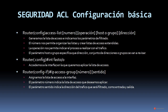Finalizamos esta parte teórica con los comandos básicos para la configuración de una ACL. El comando general es access-list, seguido del número, la operación, el host o grupo y la dirección. Con esto generamos la lista de acceso e indicamos los parámetros de filtrado. El número nos permite organizar las listas y crear listas de acceso extendidas. La operación nos permite indicar el proceso a realizar con el tráfico, por ejemplo denegarlo o permitirlo. El parámetro host o grupo especifica qué dirección o conjunto de direcciones se van a revisar.